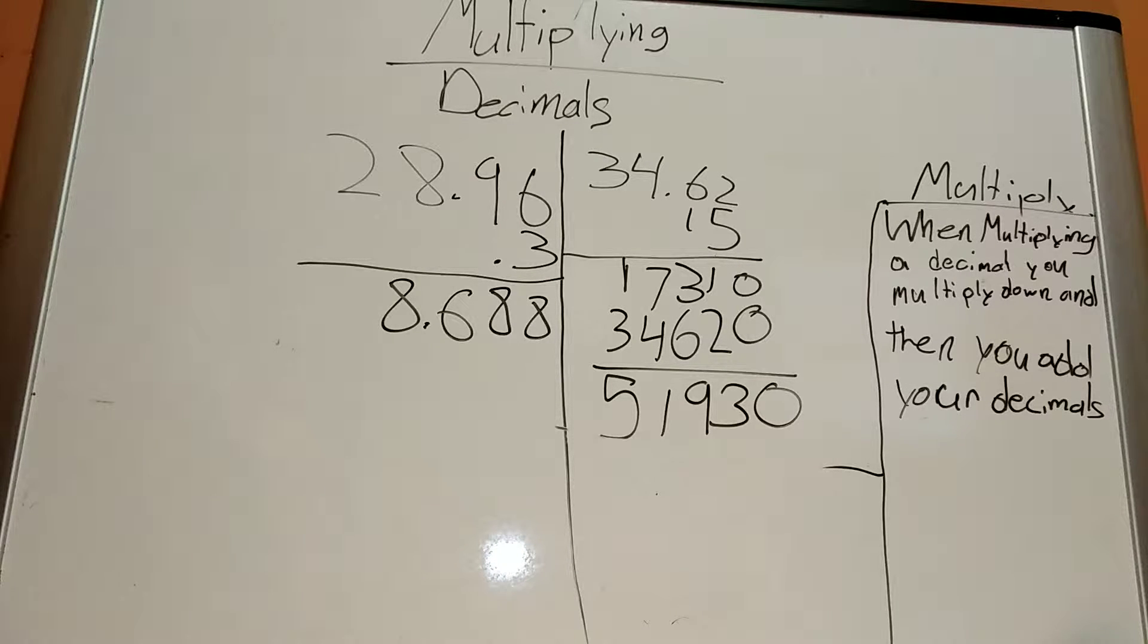Multiplying decimals, on the other hand, is very easy. When you multiply, you don't even have to line up the decimals like you have to do for dividing, adding, and subtracting.